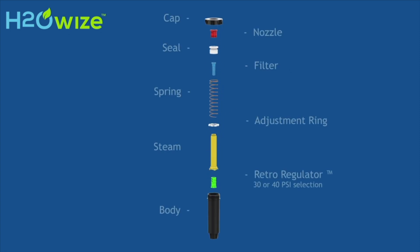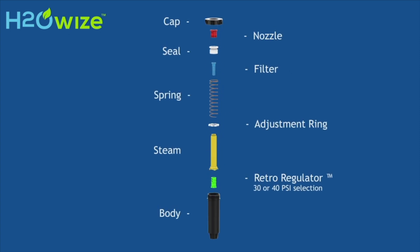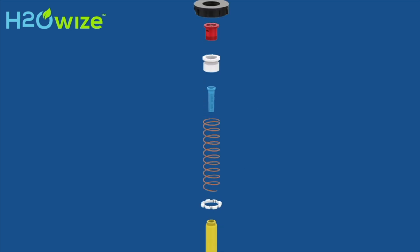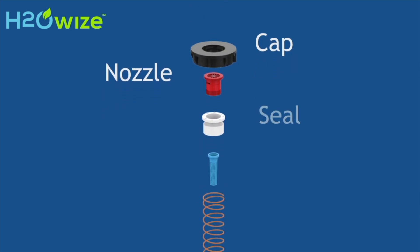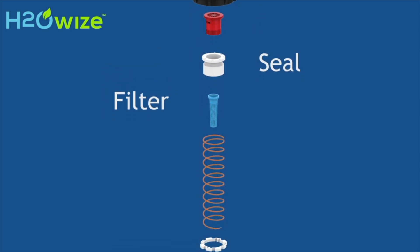Simply unscrew the top cap of the sprinkler and remove the guts and slide our retro regulator and check valve into the stem and reassemble the internals.